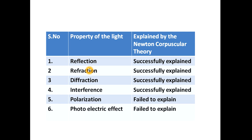However, Huygens failed to explain two remaining properties: polarization and the photoelectric effect. He was unable to explain how these two phenomena take place in light. That is why we need to look further for another light theory that can give a correct explanation for all properties of light.